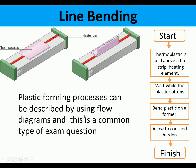Plastic forming processes can often be described using flow diagrams. Here is a flow diagram showing the process of line bending a piece of acrylic: thermoplastic is held above a hot strip heater, wait while plastic softens, bend plastic on former, allow to cool. This type of flow diagram is a very common exam question, asking you to give a particular plastic forming process in the form of a flow diagram.